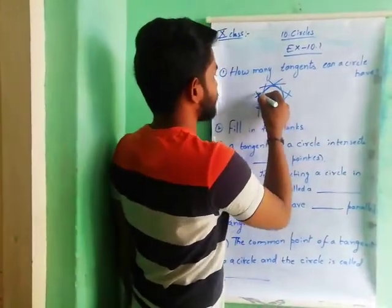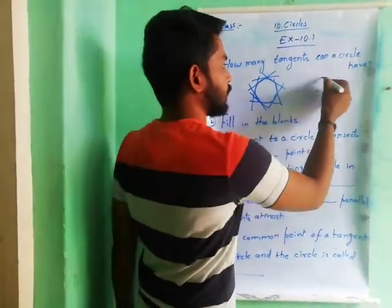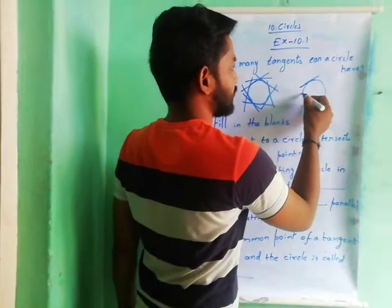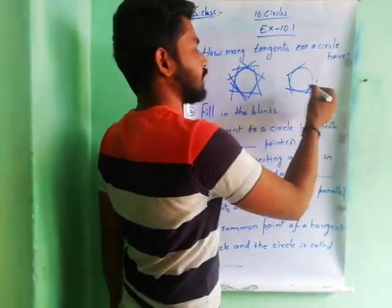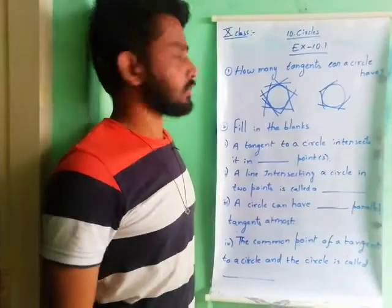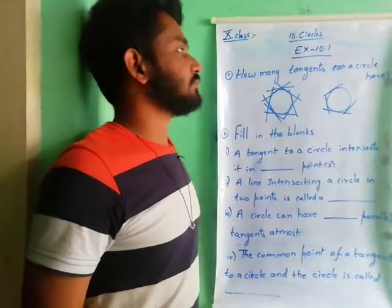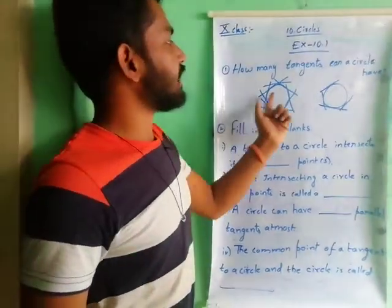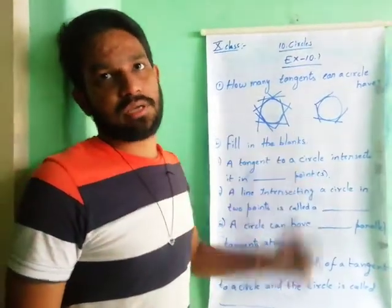For example, here exists a tangent, and here exists a tangent. If you take any point, there exists a tangent — another tangent, another tangent. So many points means so many tangents. The final answer is: a circle has infinite tangents. There can be infinitely many tangents in a circle. You have to write: infinite tangents.